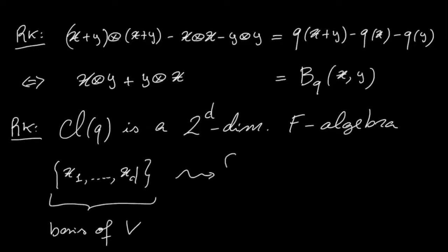then when you look at the vectors of the following form X i1 tensor et cetera X in, where i1 is greater or equal than one, and then it's strictly less than i2, et cetera, until in, which can actually be d.